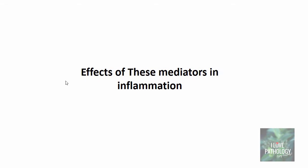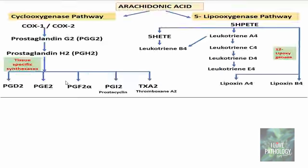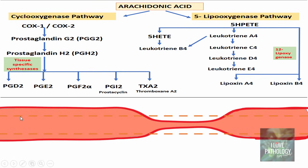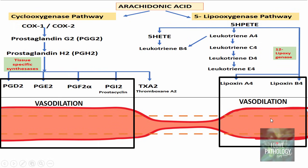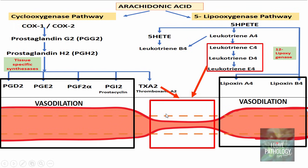Now understanding the effects of these mediators — prostaglandins and leukotrienes — in inflammation. In this illustration, I have tried to simplify how these eicosanoids act. Consider that this broken line is a normal blood vessel with dilated and constricted parts. Prostaglandin D2, E2, F2-alpha and prostaglandin I2 (prostacyclin) result in vasodilation. Lipoxin A4 and B4 also result in vasodilation. Whereas leukotrienes C4, D4 and E4 along with thromboxane A2 cause vasoconstriction.